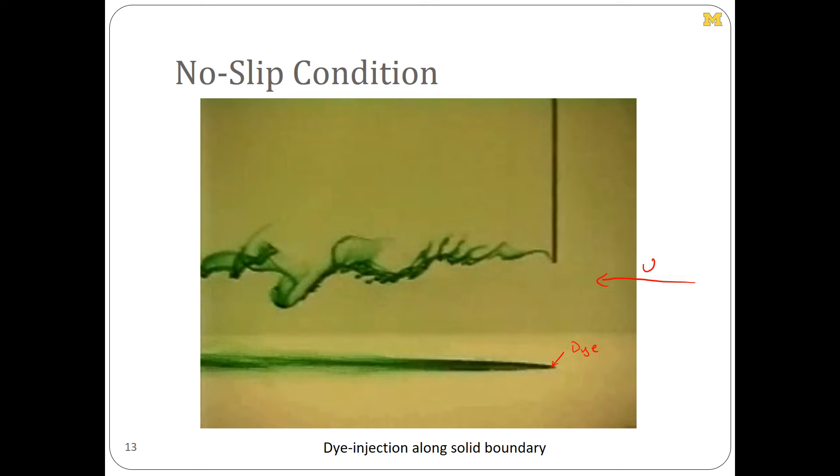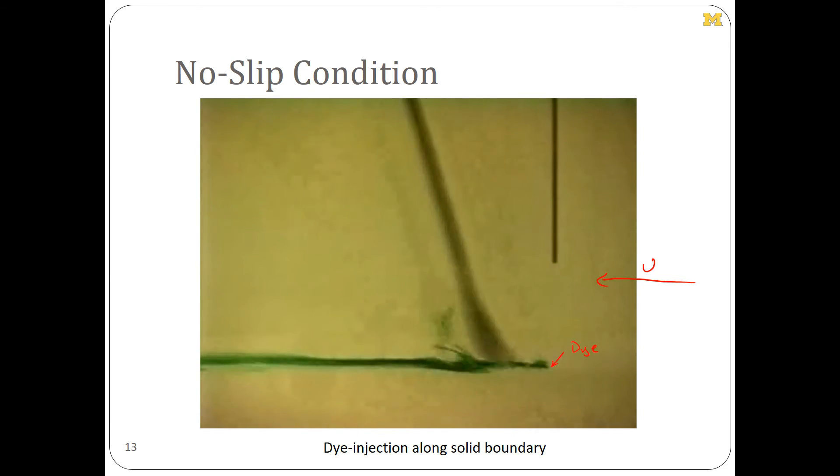They don't get swept away downstream, and this continues to be the case until somebody comes along with a little spoon-like device there and actually causes a bunch of turbulence and scrapes away those dye-carrying particles.